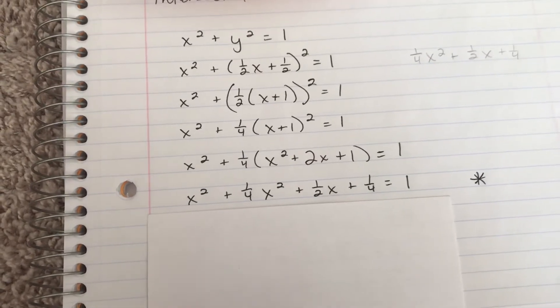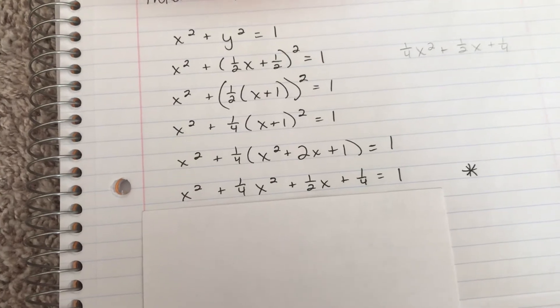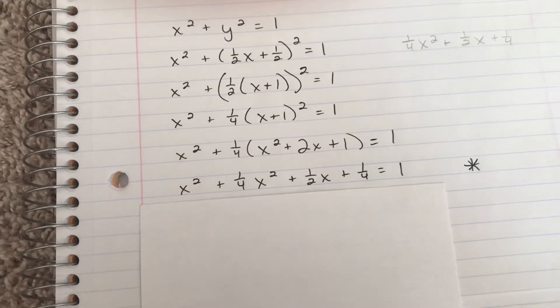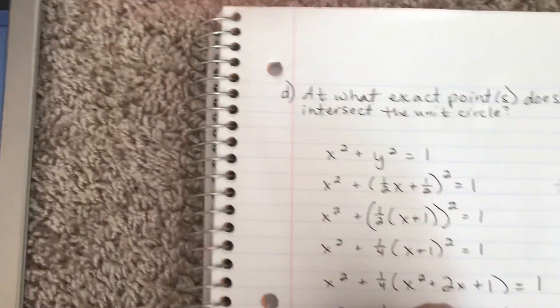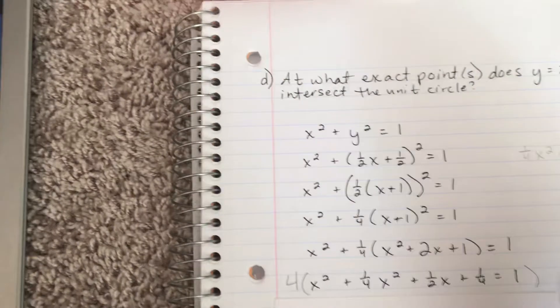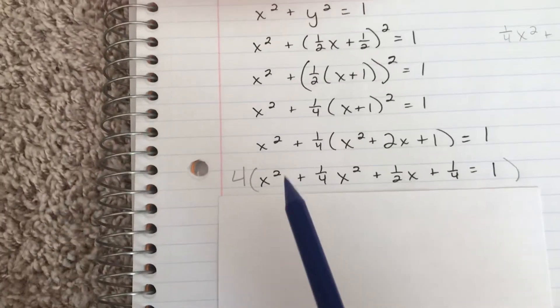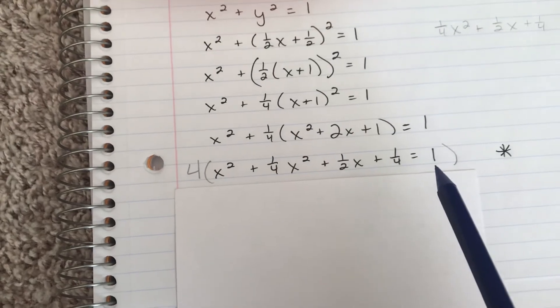Looking at this, I think about: is there a number that I can multiply everything by so that my fractions go away? In this case, multiplying by 4 is what we want to do. So I'm going to multiply everything here by 4. That means 4 times x², 4 times (1/4)x², etc., all the way including this equals 1.